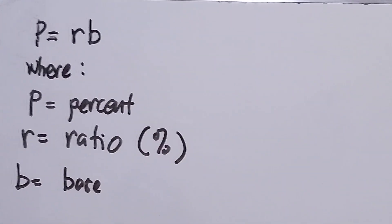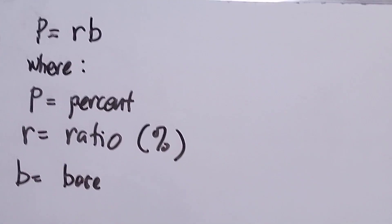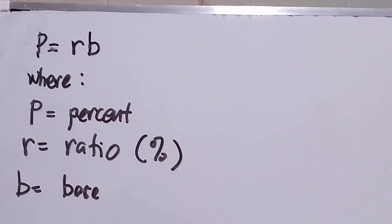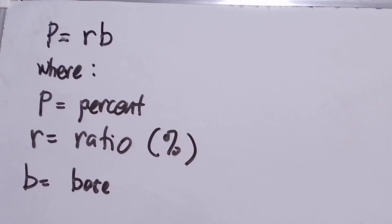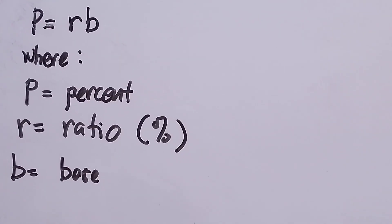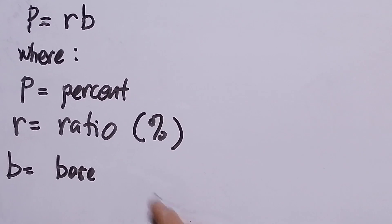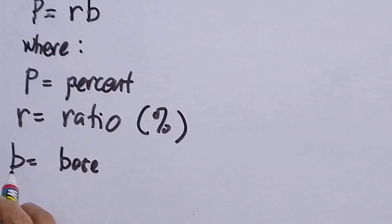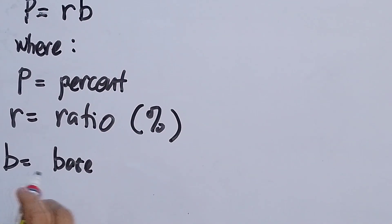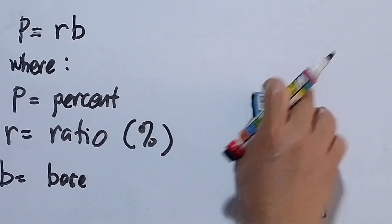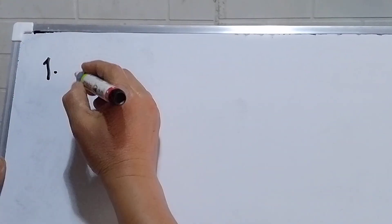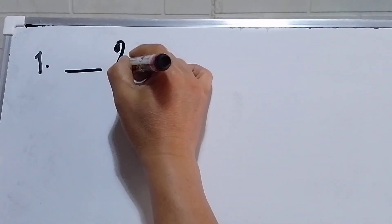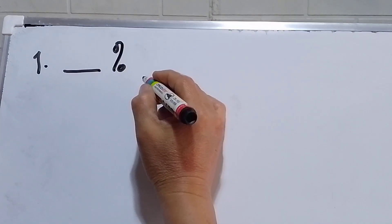Today's topic is about the equation P equals R times B, where P is your percent, R is the ratio represented by the percent symbol, and B stands for base.